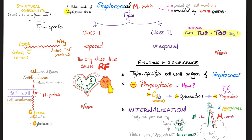Let's talk more about the M-protein. We have two types: class 1 and class 2. Class 1 is exposed; class 2 is unexposed. Only the exposed class 1 can cause rheumatic fever. This is why if I have strep throat pharyngitis, I can develop rheumatic fever. But if I have impetigo or any skin infection caused by strep, it is almost impossible to develop rheumatic fever — because the proteins are different.